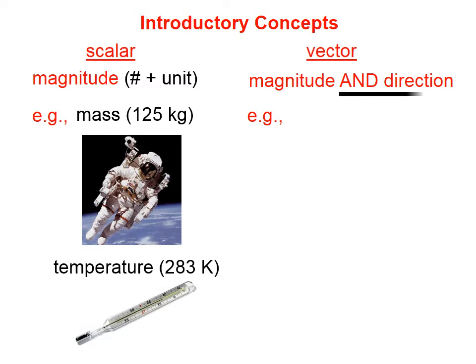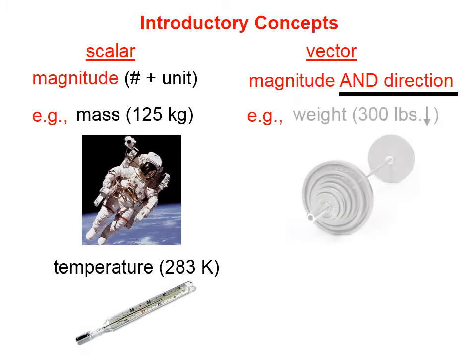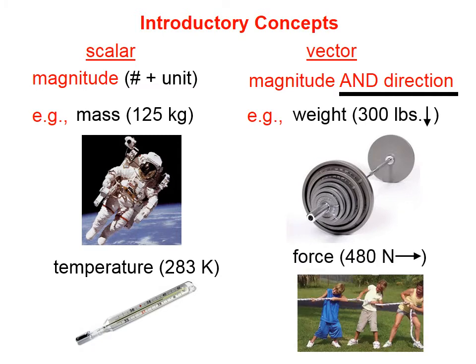A vector quantity has magnitude, like a scalar does, but it also has a direction. Weight is an example of a vector: 300 pounds downward, for example. Force pulling on a rope with 480 newtons to the right.